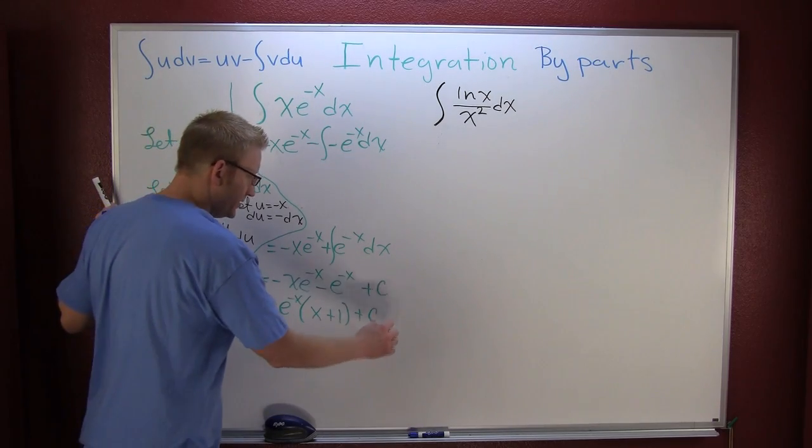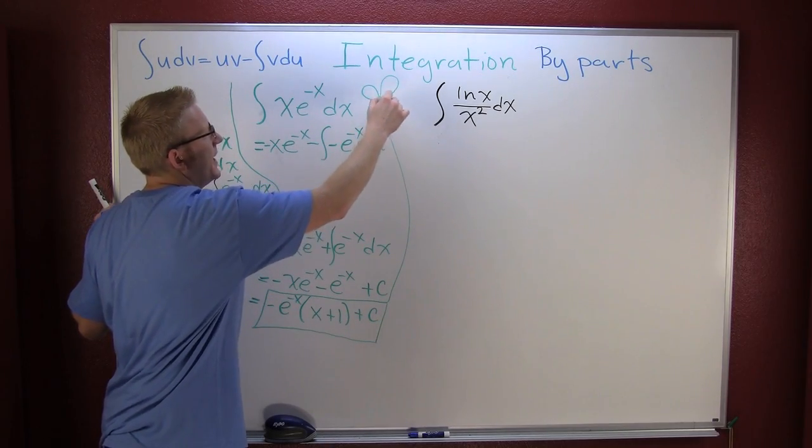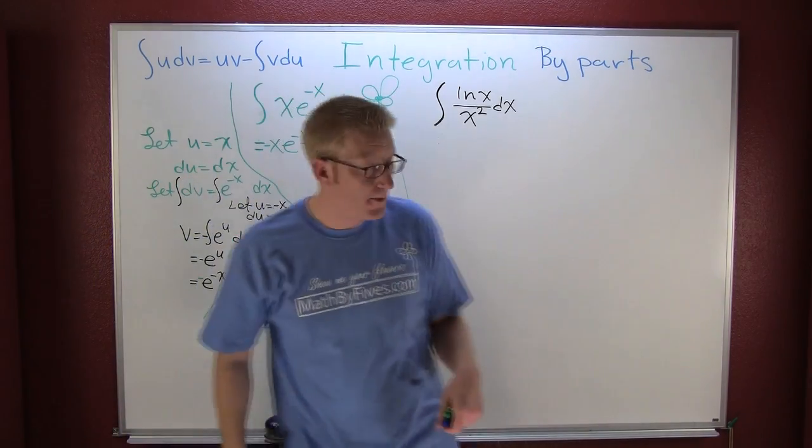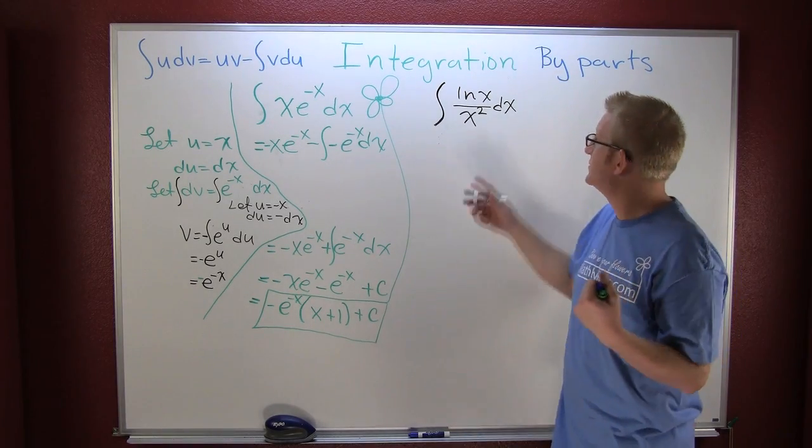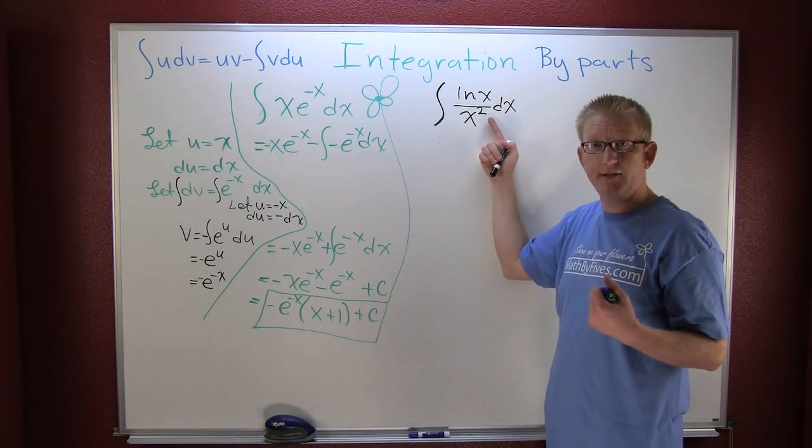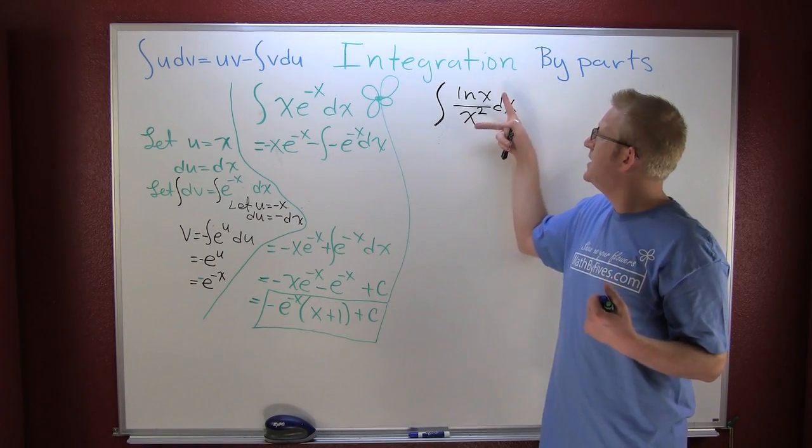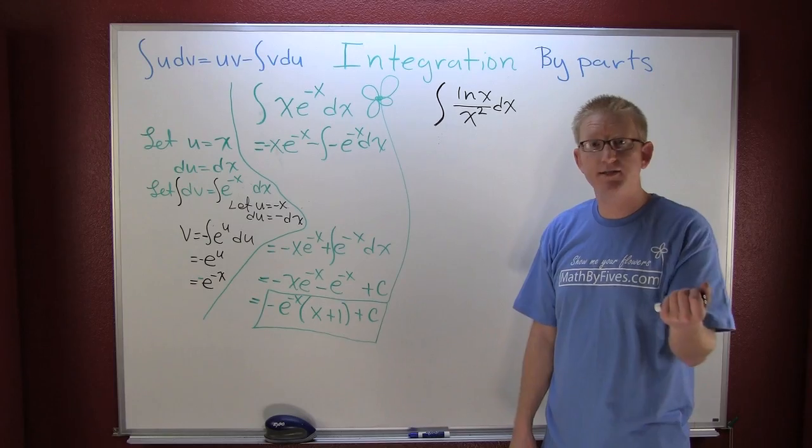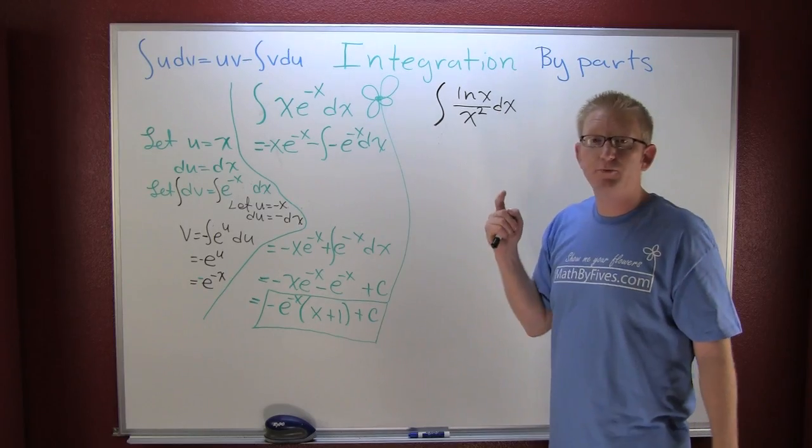Now I'm going to come over here to this example. We look and we're like, can we do substitution? If I let u be natural log of x, then the derivative of that would be one over x, and you think you're in the clear until you see that square. So here I want to try parts. In order to try parts, I'm going to let u be the thing that's easily differentiable or the thing that you don't necessarily know the integral to. I'm going to let u be the natural log of x, it's our natural choice.